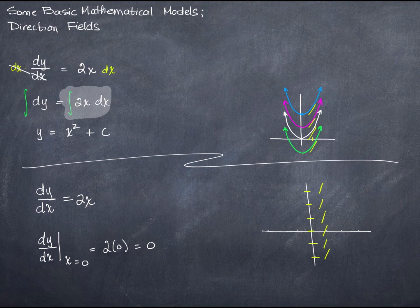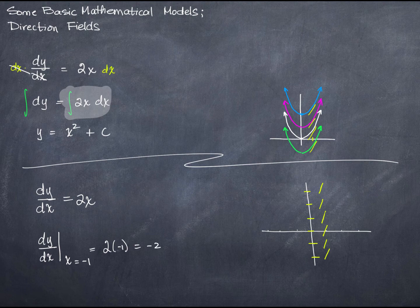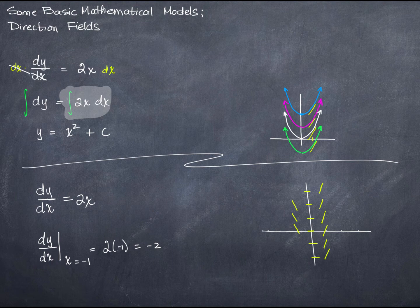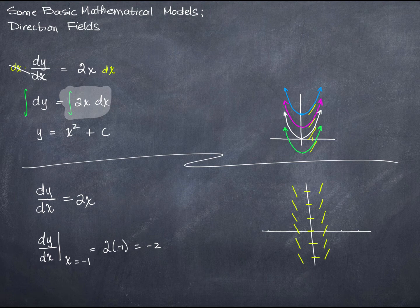I'm going to do a couple more. When x equals negative 1, I get slopes of negative 2. So I have something that looks like this. And let's do at least two more, one positive, one negative. It looks like we've got some symmetry going on here.